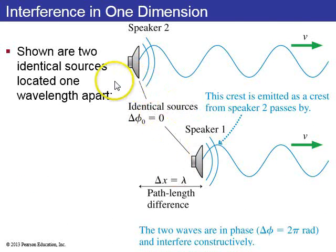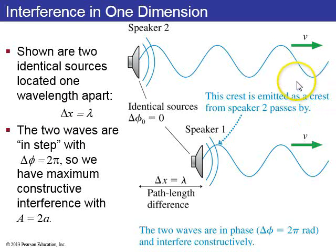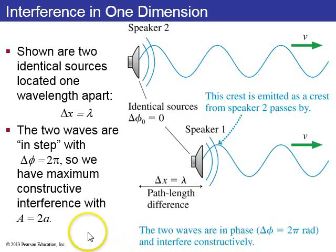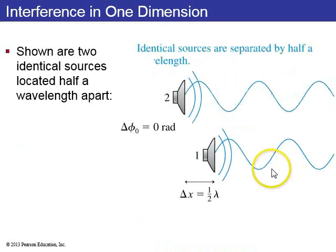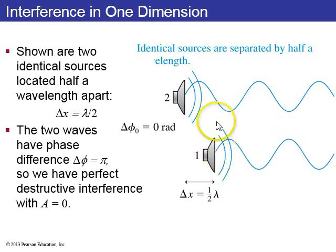Here are two speakers that are in phase and located one wavelength apart. The difference in distance delta x between a single observer to the right will be lambda. Delta x equals lambda means the two waves are in step — you have constructive interference, so the final amplitude will be 2a, where a is the amplitude of either wave. If two sources of identical wavelength are half a wavelength apart, delta x equals lambda over 2, then you have perfect destructive interference and the amplitude will be zero.